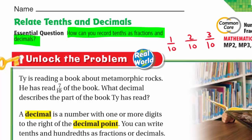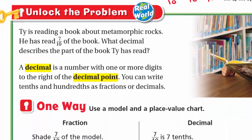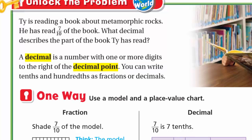To know this, let's unlock the problem. Ty is reading a book about metamorphic rocks. He has read 7 tenths of the book. What decimal describes the part of the book Ty has read? A decimal is a number with one or more digits to the right of the decimal point. You can write tenths and hundredths as fractions or as decimals.